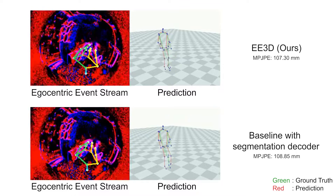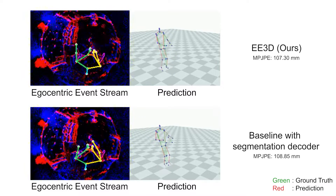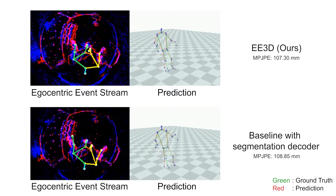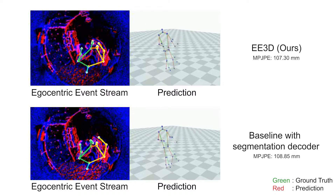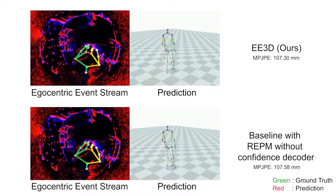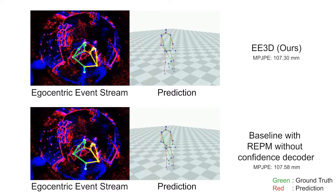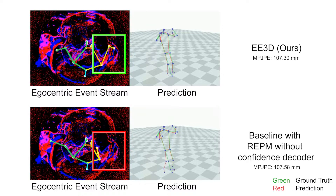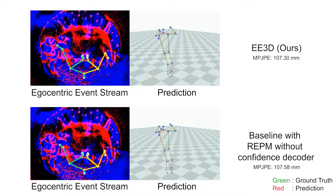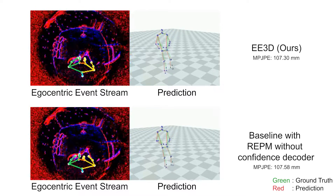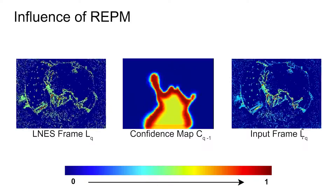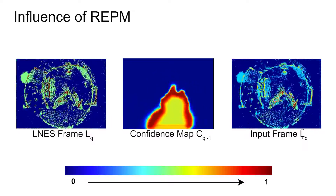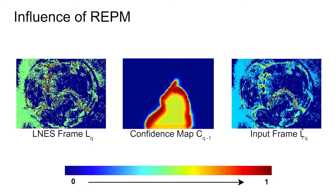Adding the segmentation branch to the baseline improves the overall mean per joint position error. However, the lack of precise correspondences between the human body mask and event streams results in inaccurate 3D poses. The absence of the confidence map in the residual event propagation module produces inconsistent 3D poses, reflected in a higher mean per joint position error. We find that events generated by the human body hold more significance in the input frame, whereas in the LNES frame, higher weights are assigned to recently fired events.